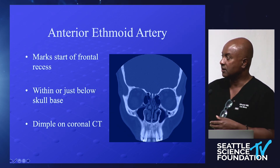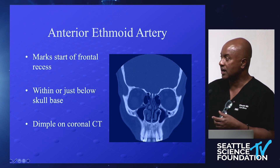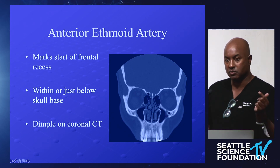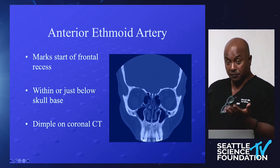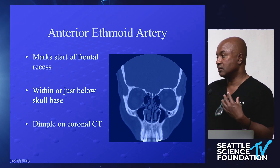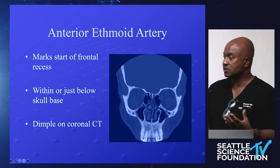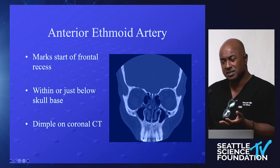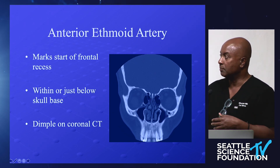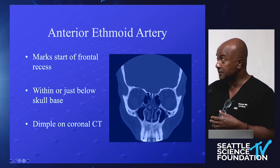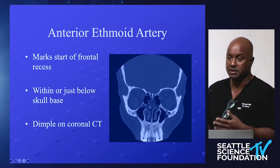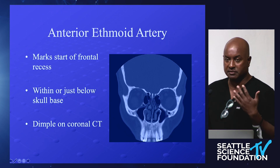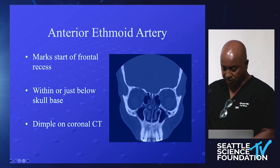The artery can retract into the eye, retract into the brain, or cause a crack of the cribriform plate where the artery enters the brain next to the olfactory groove. Hopefully you can cauterize it with a bipolar or place pledgets on it and it will settle down — sometimes it's only a branch of the artery. If necessary, you may have to repair the CSF leak at the same time. Had you identified it preoperatively, you could have avoided all of this.